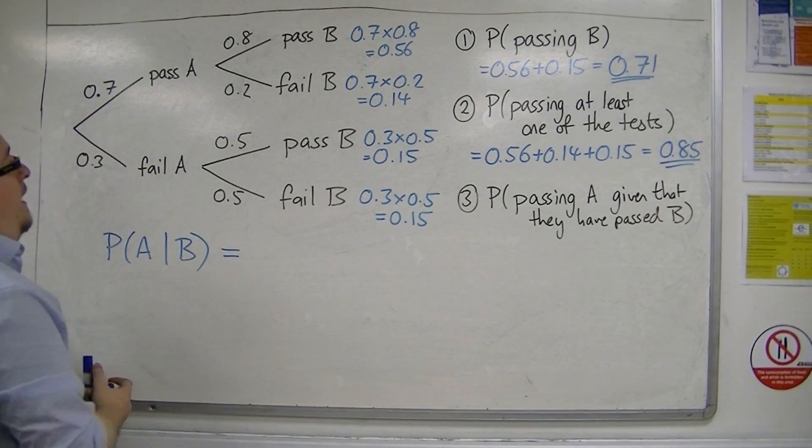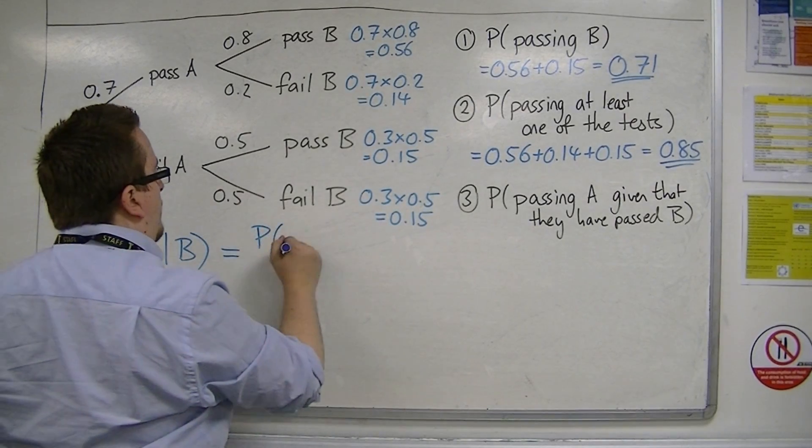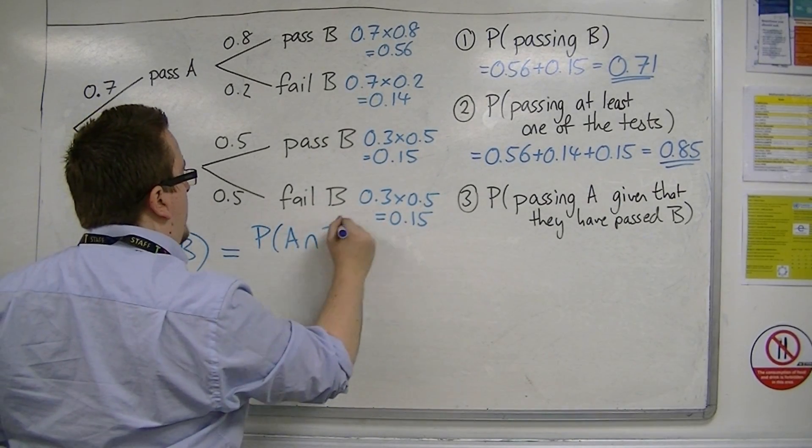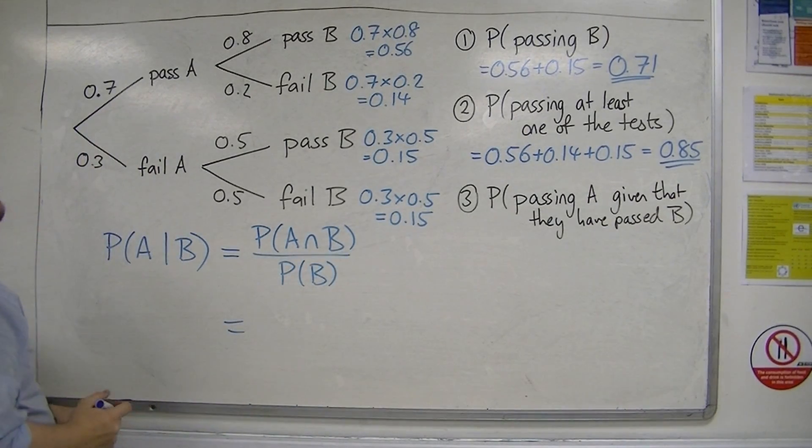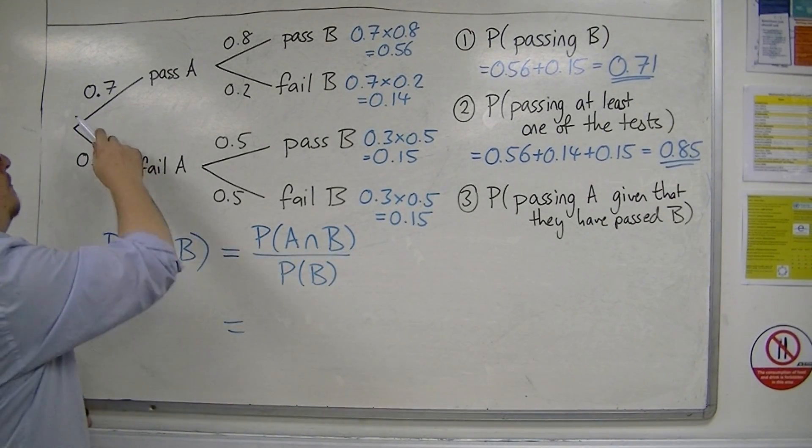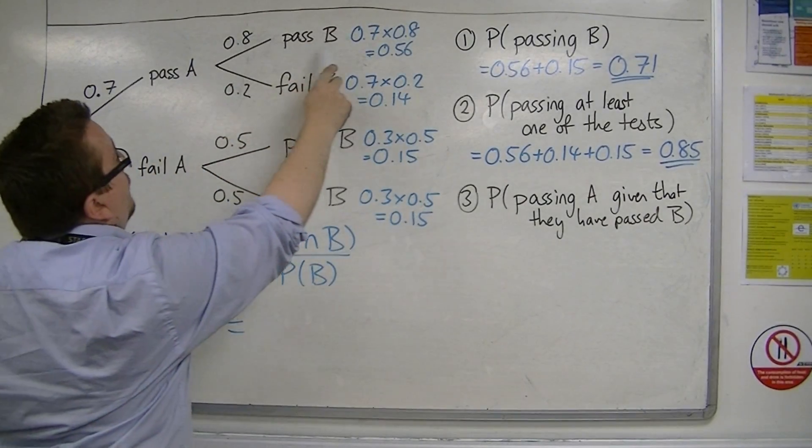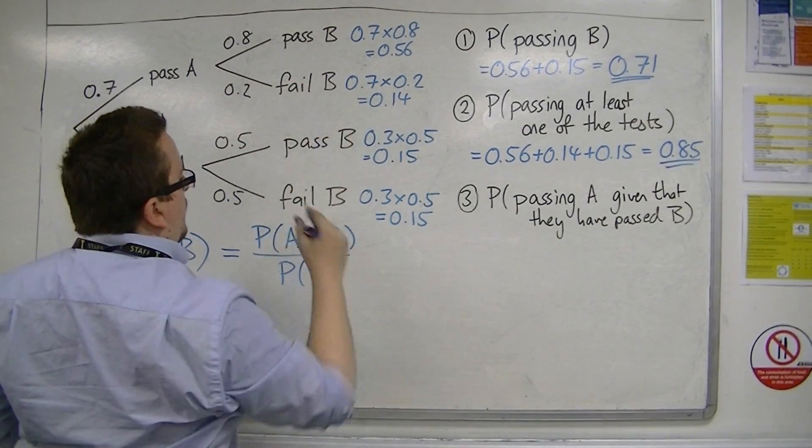That is the probability of passing A and B divided by the probability of passing B. The probability of passing A and B, we already calculated in the first part, was 0.56.